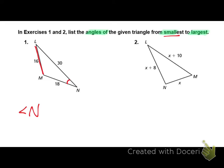And that is across from angle N. So that is the smallest angle. So our medium side is 18, it's across from angle L, which means the longest or the largest angle is across from the longest side, which is angle M. Make sure you're writing the angle symbol when you name an angle.